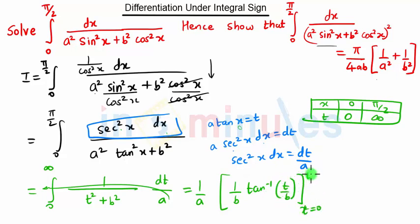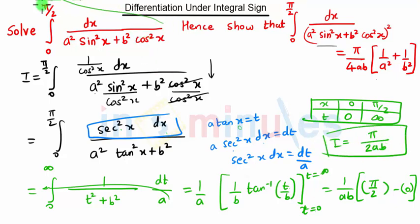So we get 1/(ab) times upper limit minus lower limit. When we put t equal to infinity, we have tan⁻¹(∞) which will be π/2. When we put t equal to 0, we get tan⁻¹(0) which is 0. So our I will become π/(2ab). So this is our I, that is this integration.